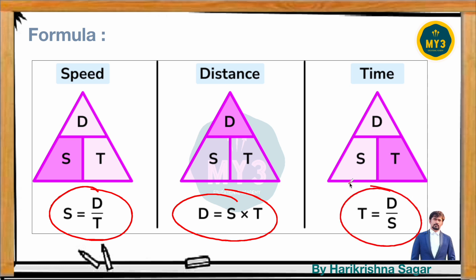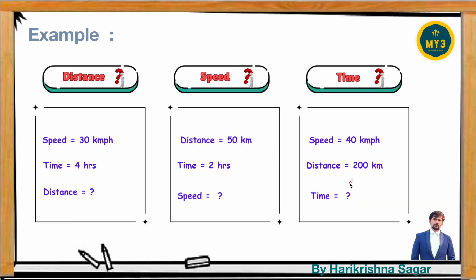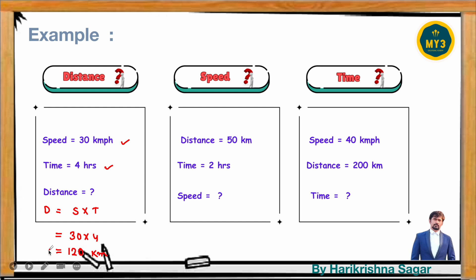You must remember these formulas to solve them. For example, if they ask you to find the distance: speed is 30 km per hour, and time is 4 hours. What is the distance? Distance = speed × time = 30 × 4 = 120 kilometers.